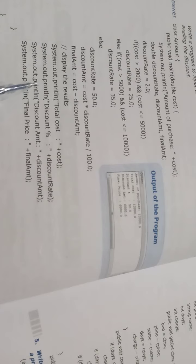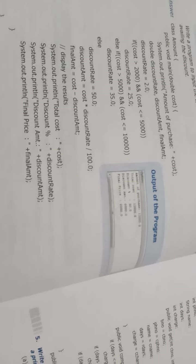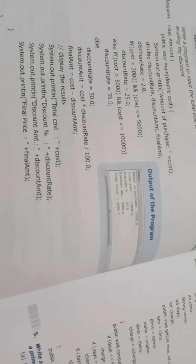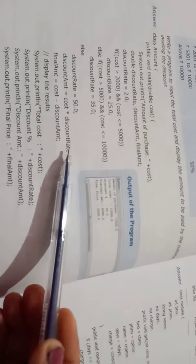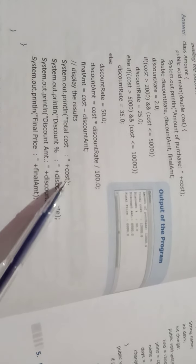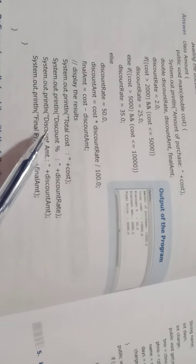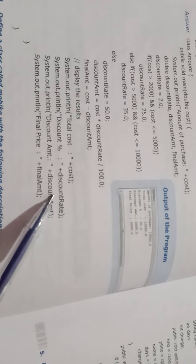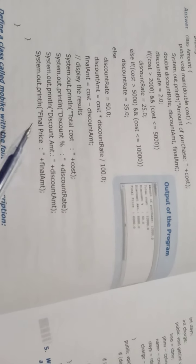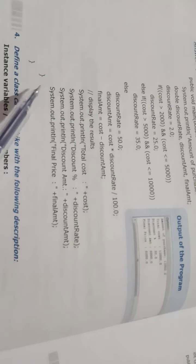Result dikhane ke liye message print karayenge. Execute hone ke baad, saare conditions check hone ke baad message aayega: total cost equal to itna, discount equal to discount rate itna, discount amount equal to discount amount itna, aur final price equal to final amount itna.